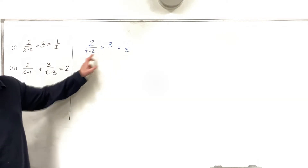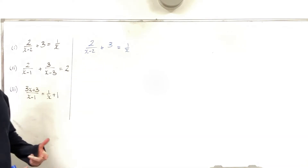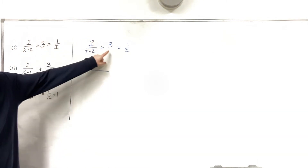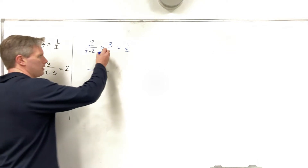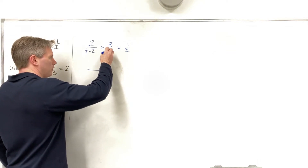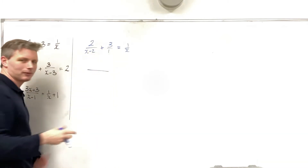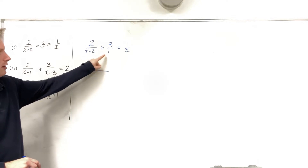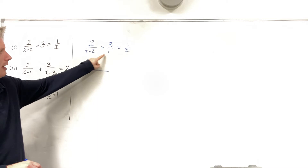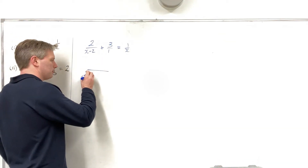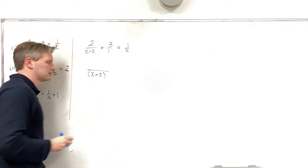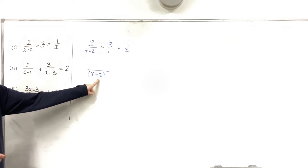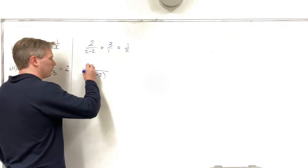I have 2 quantities on the left-hand side, and I want to bring these two together. I want to find the common denominator between this term and 3. So I'm going to write this 3 as 3 all over 1, so that I have a fraction plus a fraction. The common denominator between x minus 2 and 1 is simply x minus 2. So x minus 2 goes into x minus 2 once, and once times 2 is 2.